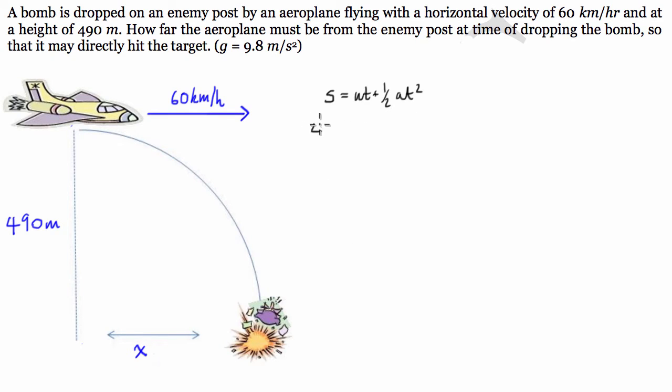So let's sub in what we know. The distance is 490 meters. The initial velocity is zero, so I'm just going to leave it out. We've got ½ times acceleration, which the question says is 9.8, times t². Now this has been quite nice to us here because we're going to solve for t. If we multiply both sides by 2, we get 980 = 9.8t².